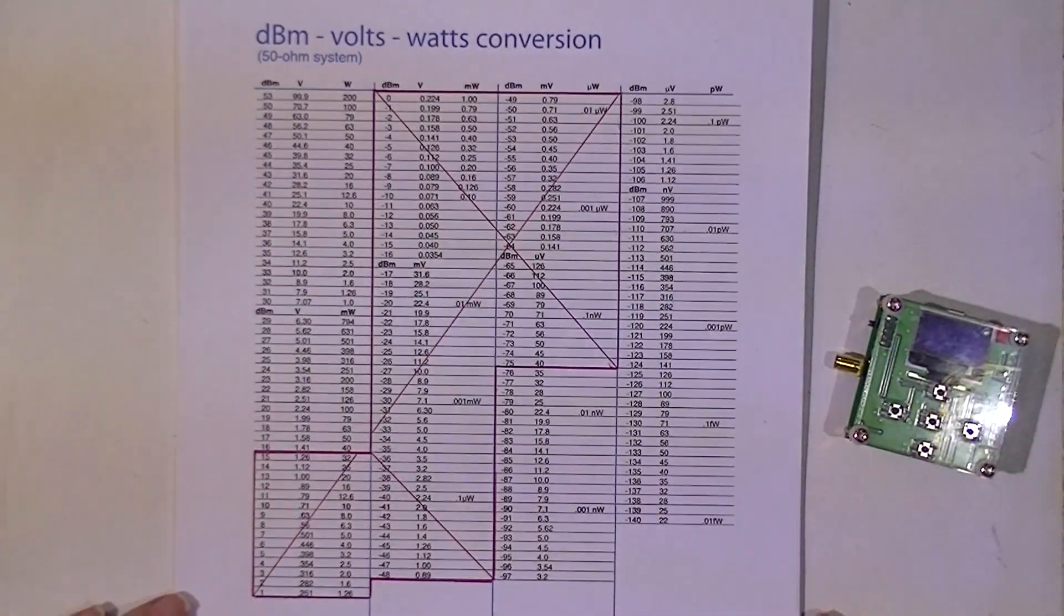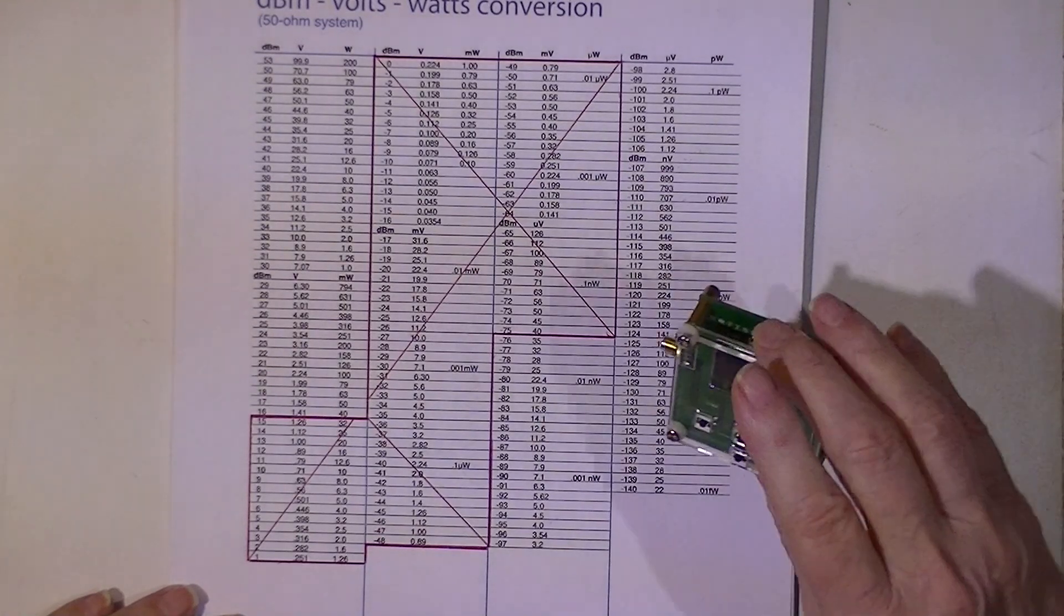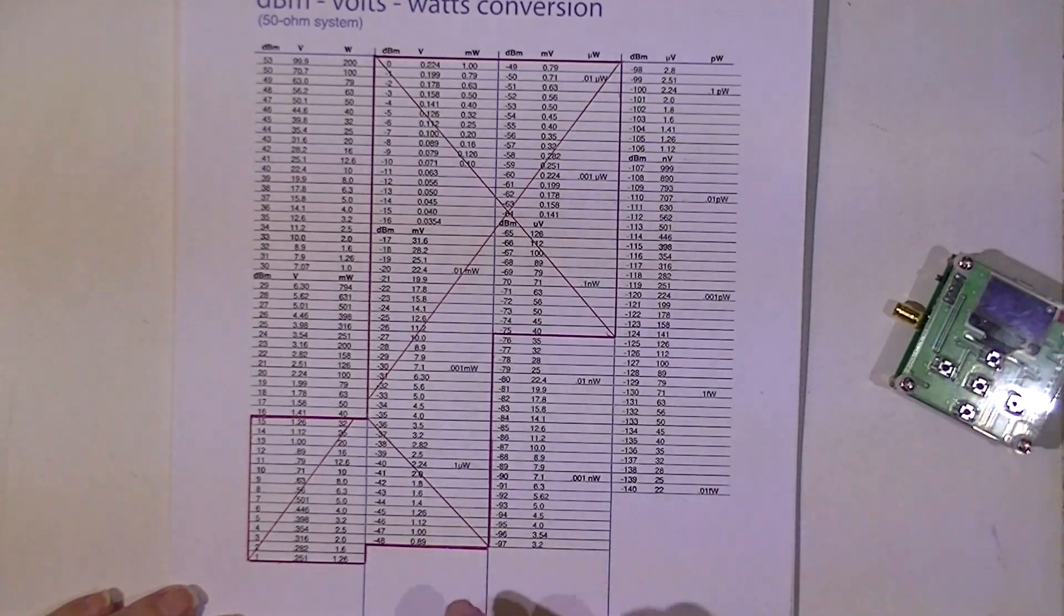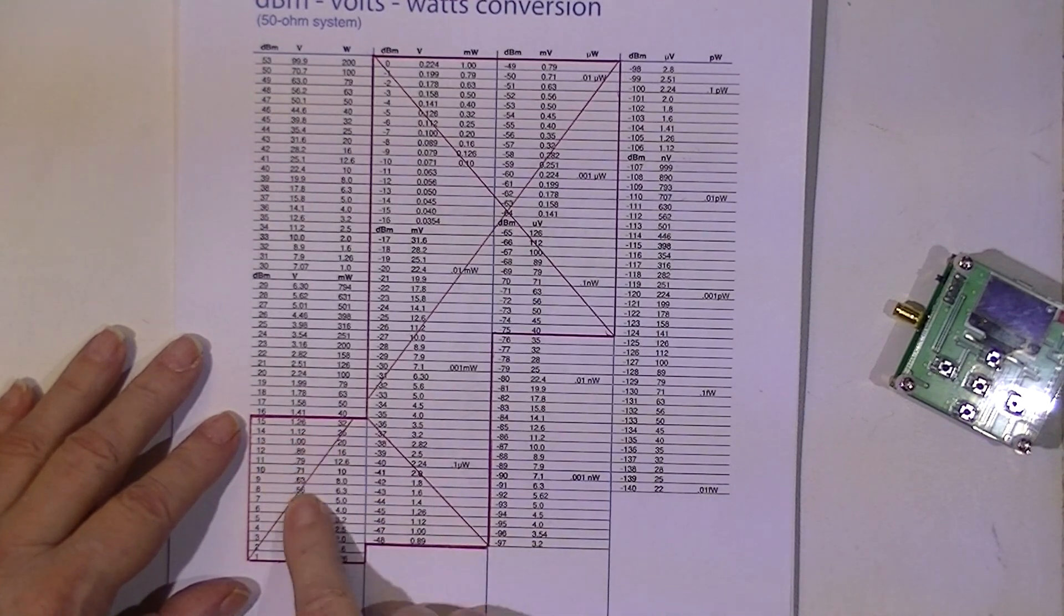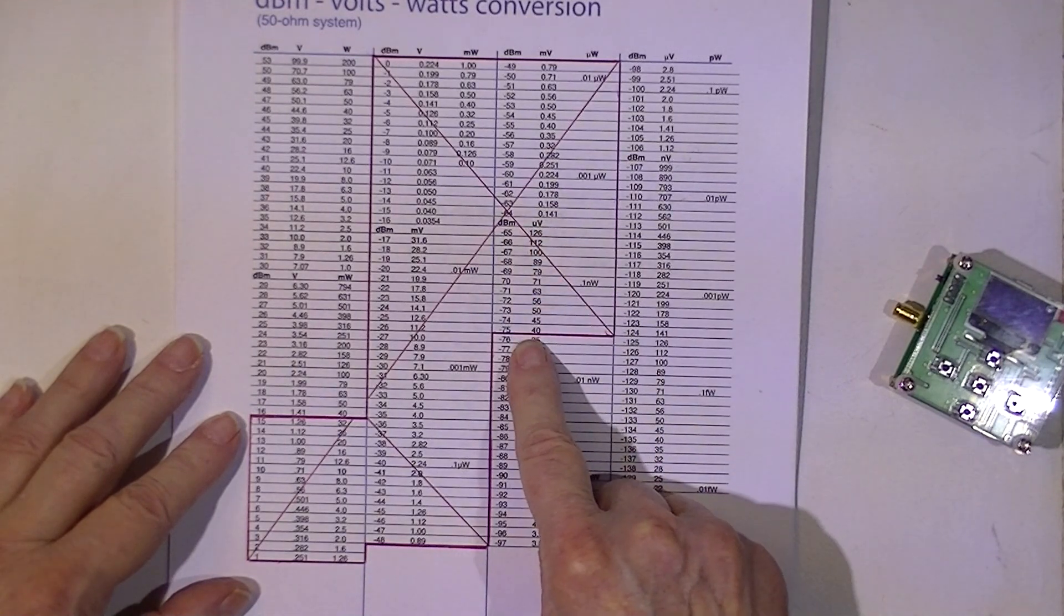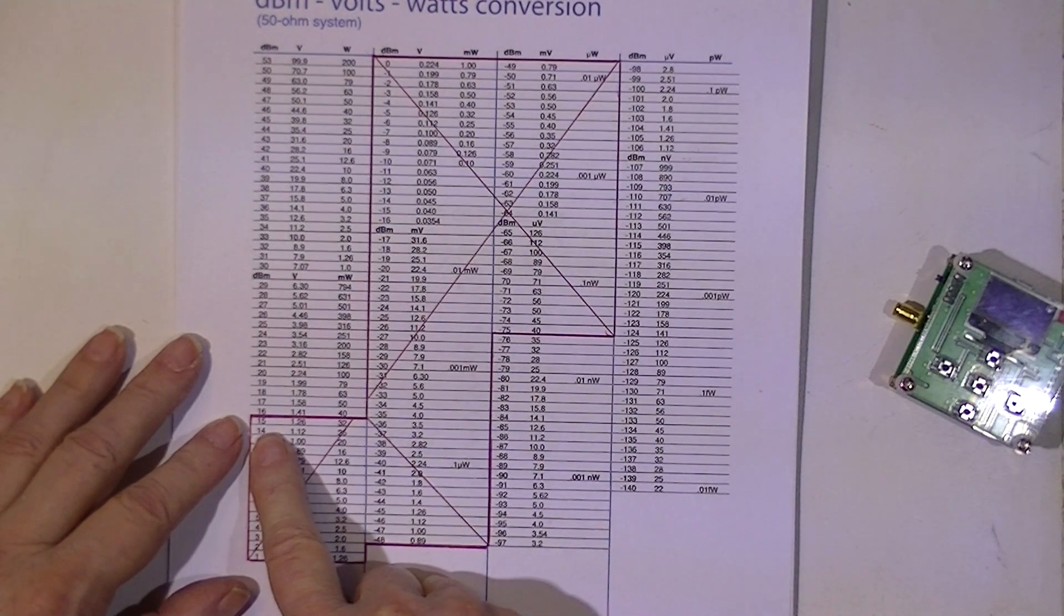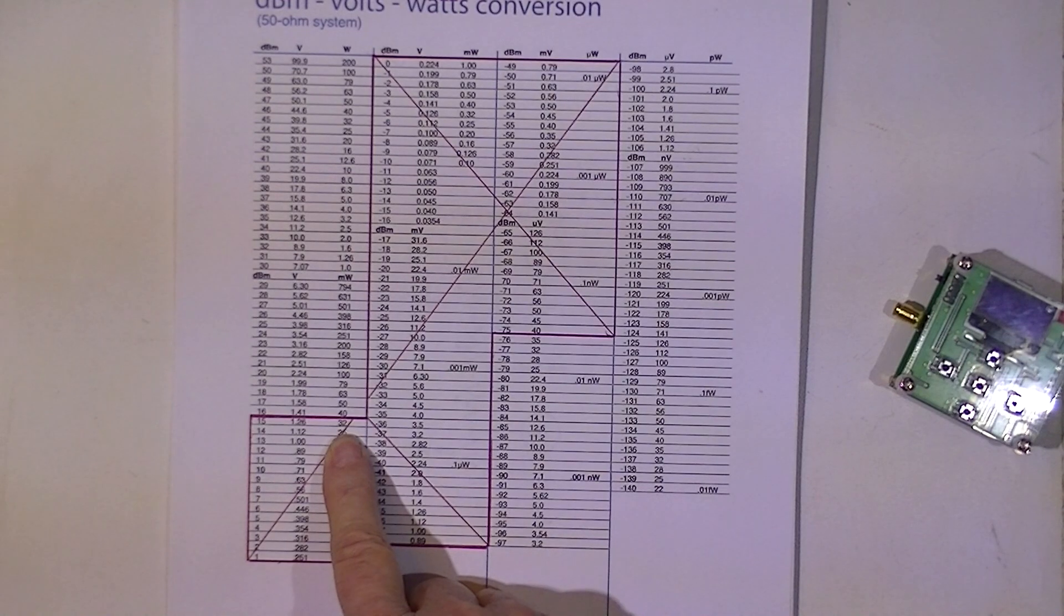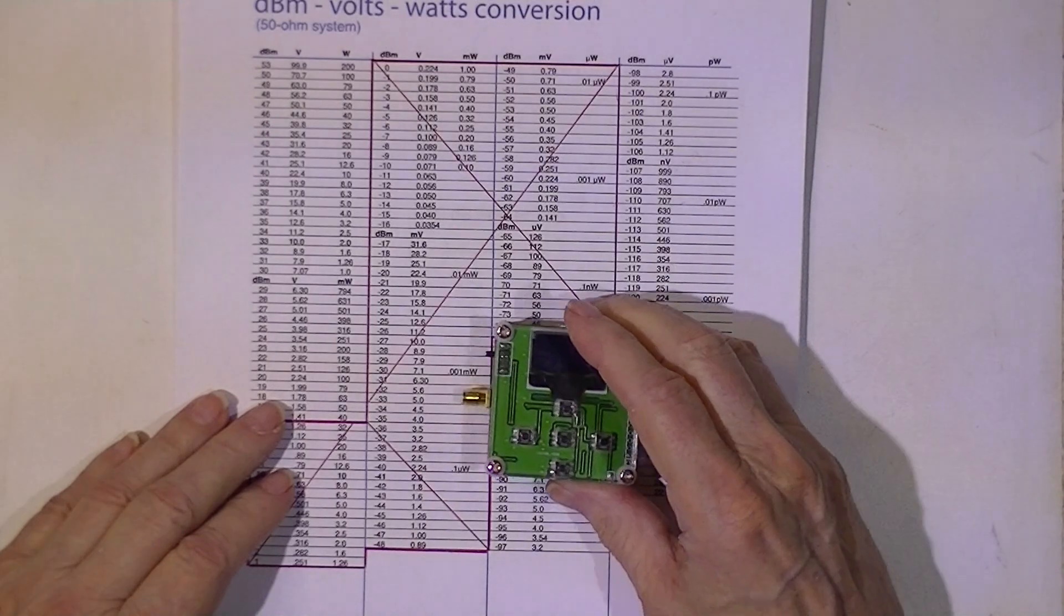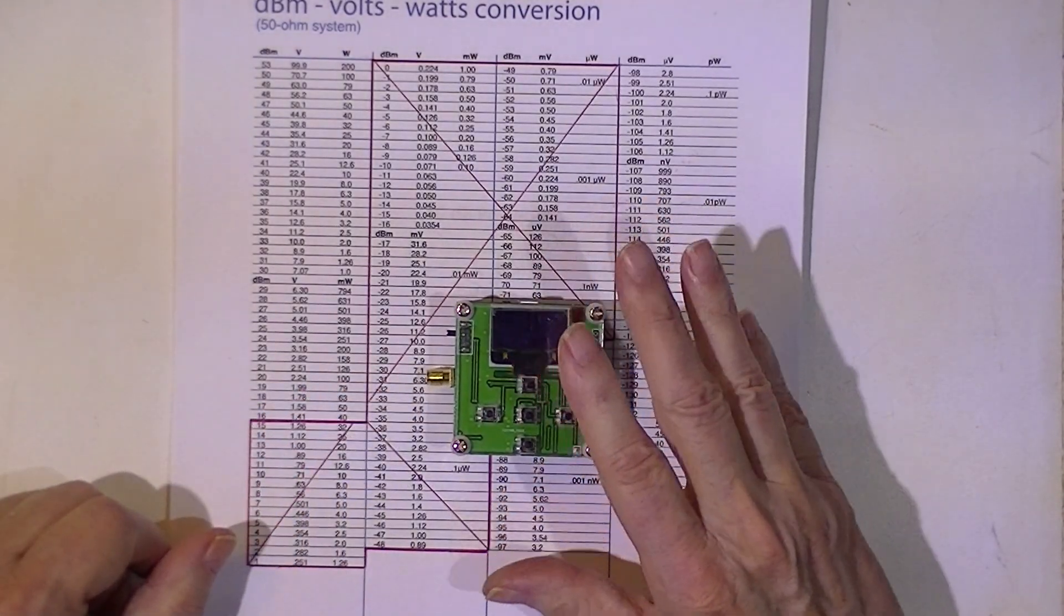The OLED wattmeter has a native, internal measuring range from 15 dBm down to minus 75 dBm. Now, 15 dBm equates very close to 32 milliwatts. In other words, I can put 32 milliwatts maximum into this thing without hurting it.